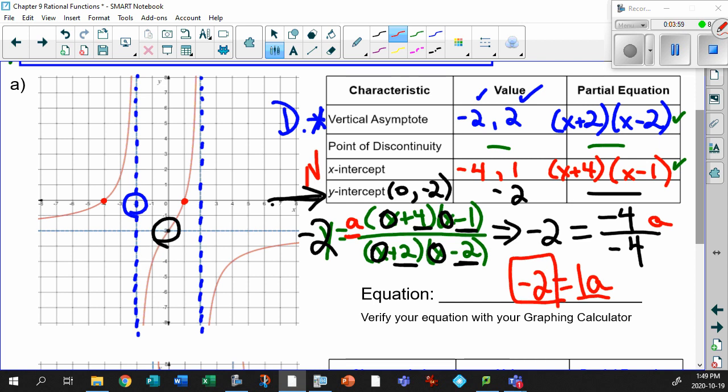So what is your equation then? Well, y equals. There's the a value of minus 2. Okay. There's your numerator of x plus 4, x minus 1. There's your denominator of x plus 2, x minus 2.